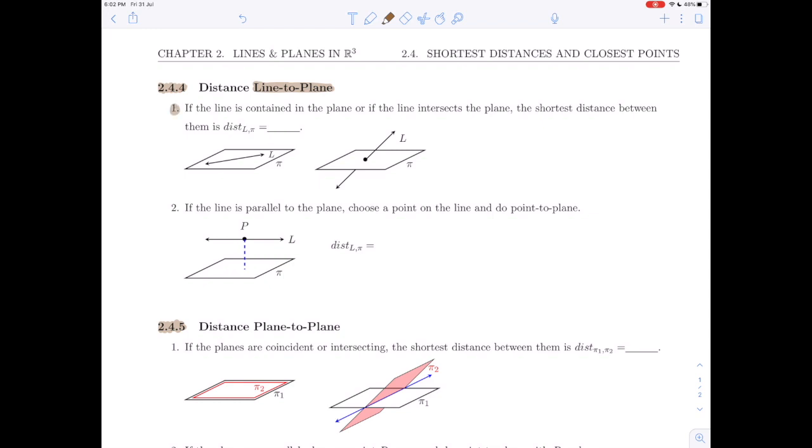The first possibility to consider here is if the line is contained in the plane, or if the line intersects the plane, then the distance from the line L to the plane π is 0. Obviously, if it's in the plane, then all points have 0 distance from the line to the plane, and the shortest distance is 0.